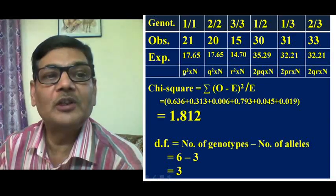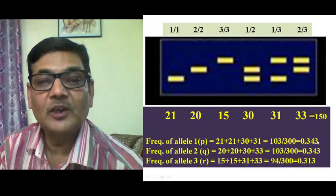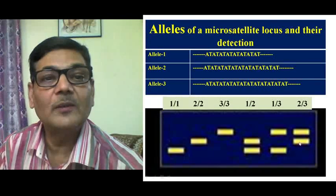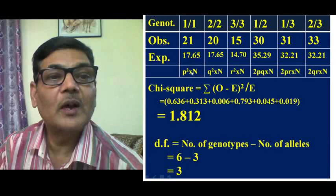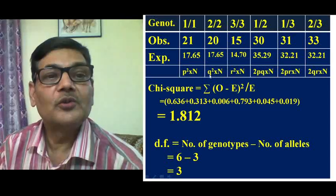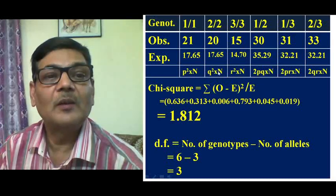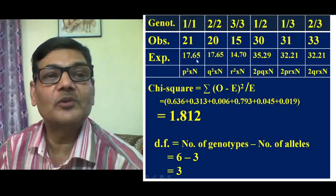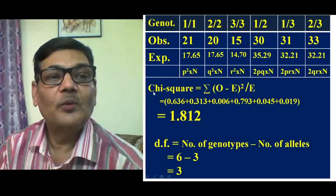When we put the values — P = 0.343, Q = 0.343, R = 0.313 — into these formulas and multiply by N = 150, we get the expected numbers for each genotype. For example, P² × 150 gives the expected number for genotype 1/1. Similarly, squaring Q and multiplying by 150 gives the expected number for 2/2. This is the way we calculate the expected numbers.